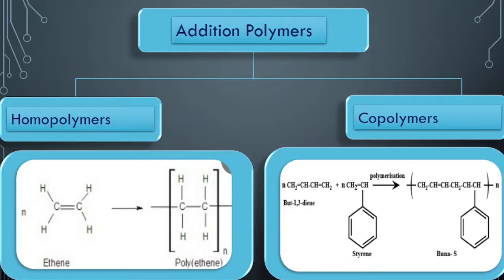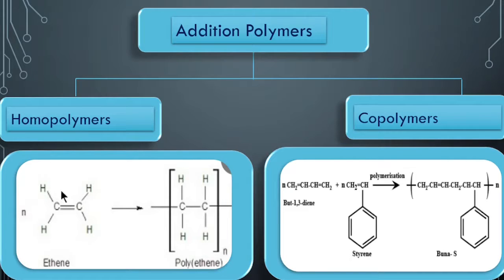What is addition polymerization? It can produce homopolymers or copolymers. Homopolymers means a single monomer forms a long chain. Like ethene - the double bond breaks, forming plus and minus ends, then they combine to form a single bond, and this chain continues. So it forms polyethylene.